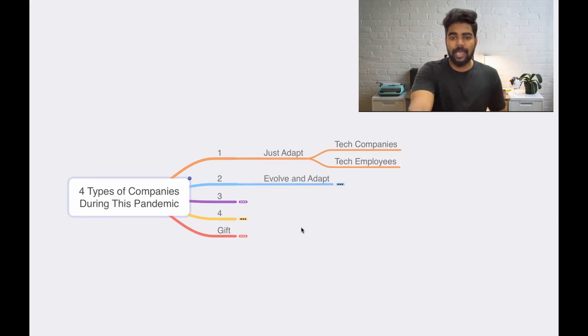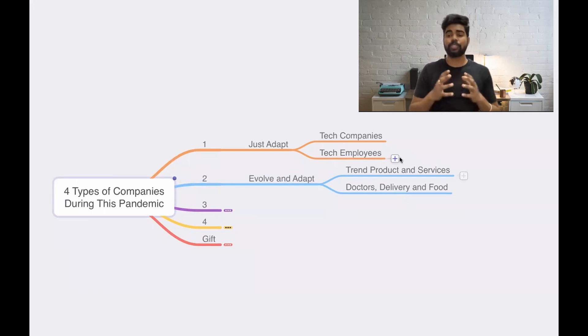Number two, evolve and adapt. They just need to evolve into something else and then adapt. These kinds of companies are nothing but companies which have the product or service that they need for this pandemic time.